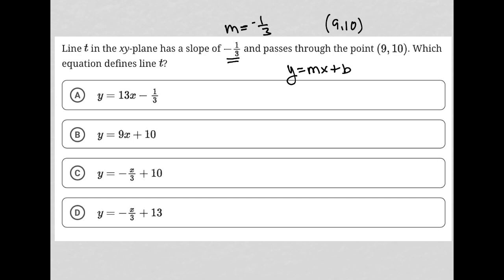I'm going to plug all of this information in. So I know that X is 9, Y is 10, and M is negative one-third.